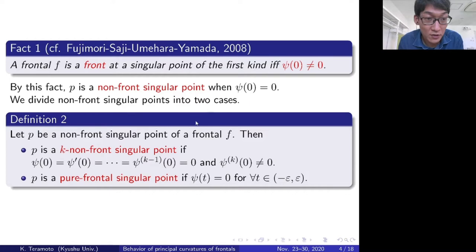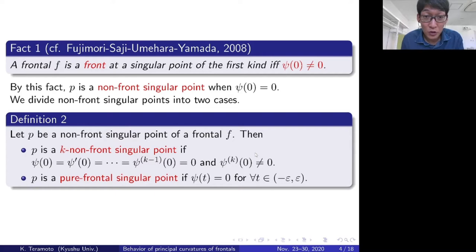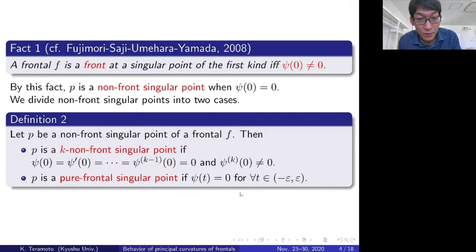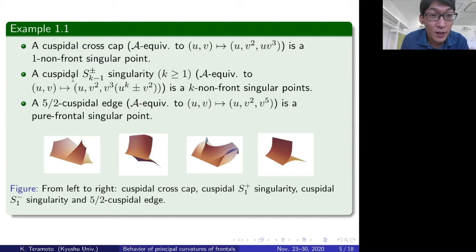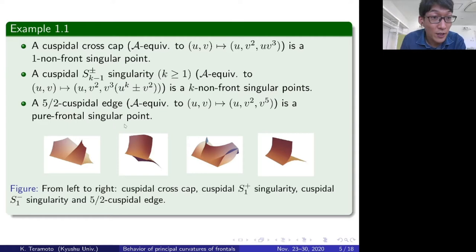We divide non-front singular points into two cases. Let P be a non-front singular point of a frontal f. Then P is a k non-front singular point if ψ satisfies this condition for some positive integer k. The other case is that P is a pure frontal singular point if ψ vanishes along γ. A cuspidal cross cap is a typical example of a 1 non-front singular point, a cuspidal S1± singularity is a typical example of a k non-front singular point, and a (2,5)-cuspidal edge is a typical example of a pure frontal singular point.